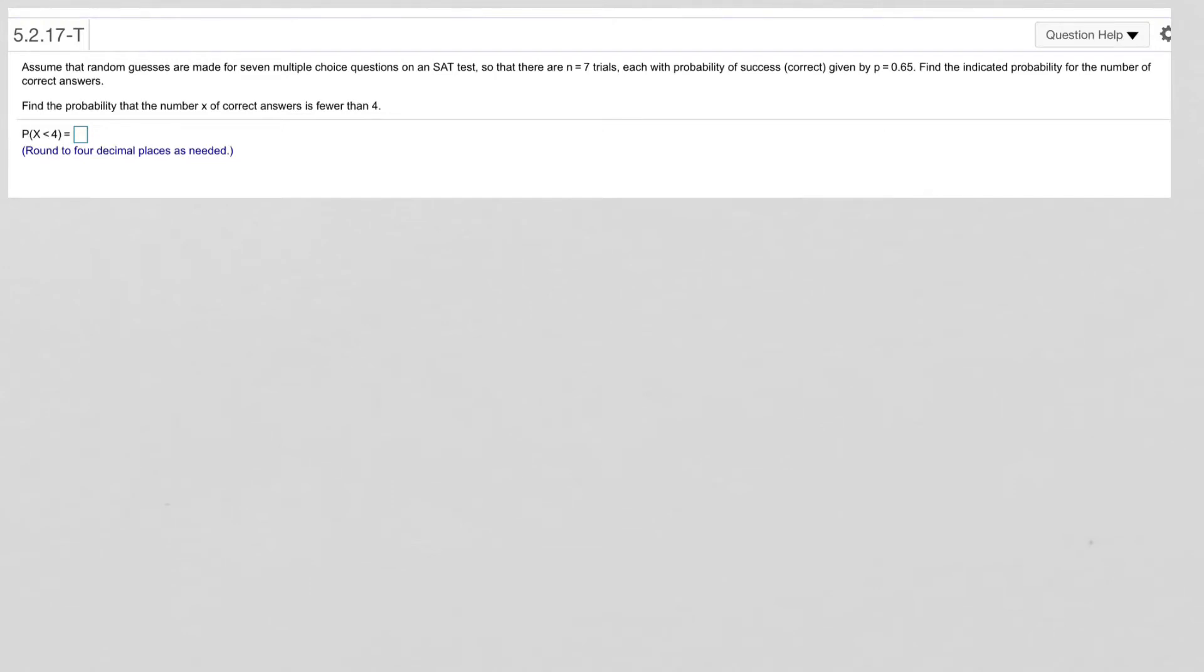In this problem, it says to assume that random guesses are made for seven multiple choice questions on the SAT test, so that there are N equals seven trials, each with a probability of success of getting the answer correct, given by P equals 0.65. Find the indicated probability for the number of correct answers.